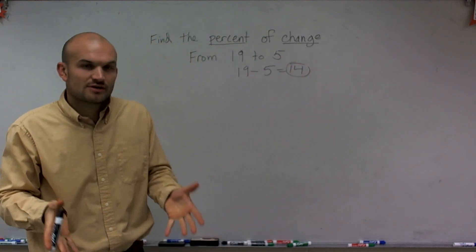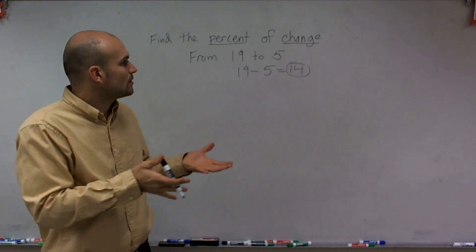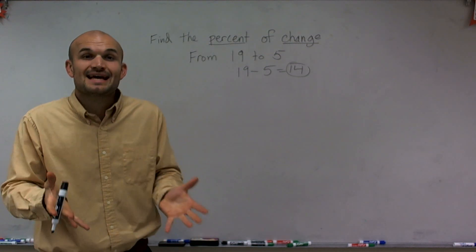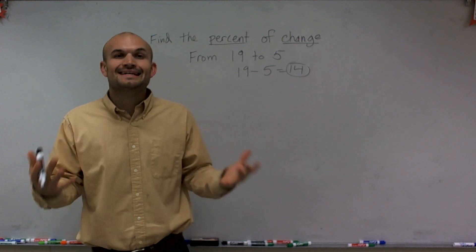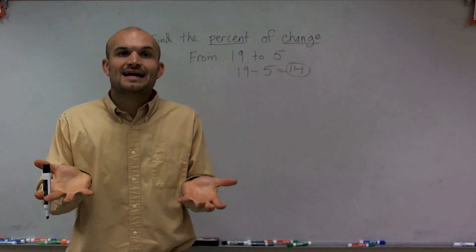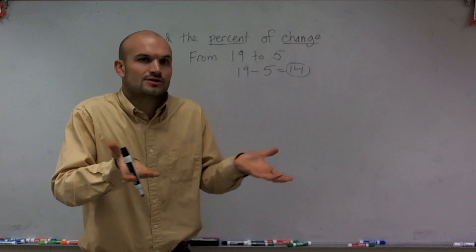So that means the change is going to be 14, but what we want to do is find the percent of change. So what we did is we started with 19, right? That's like our total, our initial amount, and so if we have 19 and then we lost or went down to 5, we changed in the negative direction.